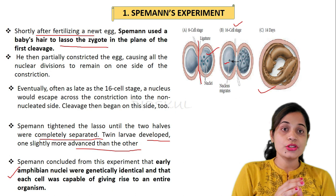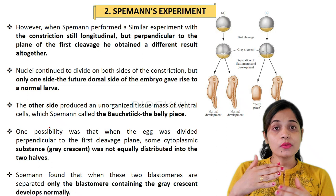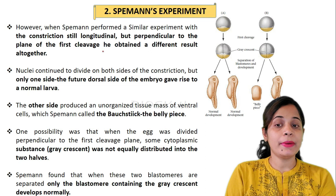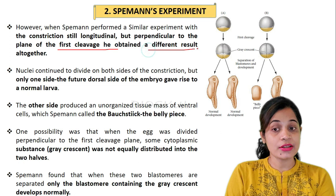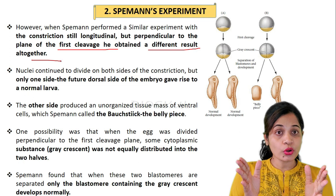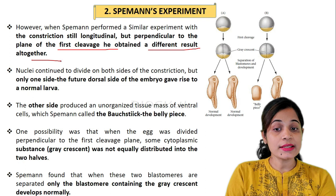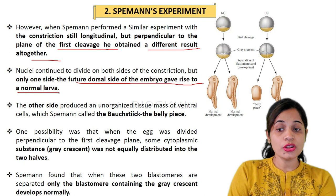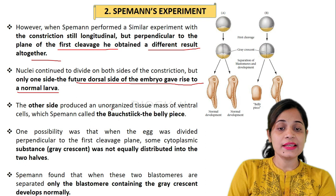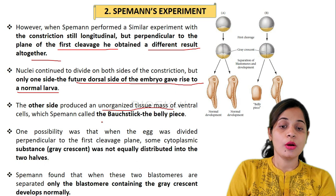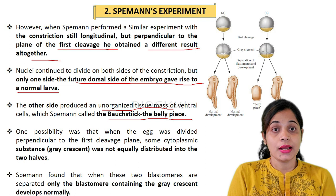The second experiment was similar to the first but the constriction was perpendicular to the plane of first cleavage, and he obtained a different result. Nuclei continued to divide on both sides of the constriction, but only one side — the future dorsal side of the embryo — gave rise to a normal larva, whereas the other side, the ventral cells, formed an unorganized tissue mass called the belly piece.